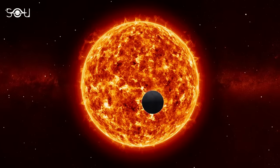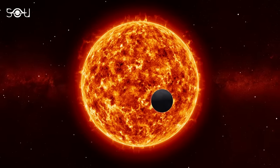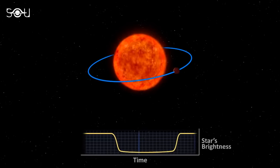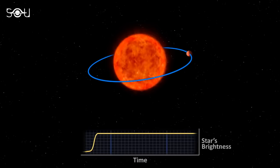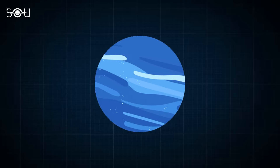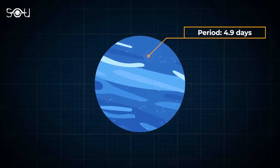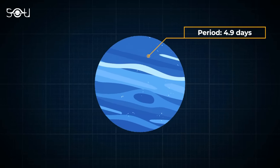The transit method can also reveal some of the planet's crucial physical parameters. For example, by looking at the period at which the dip in starlight is occurring, one can calculate the orbital period of the planet. TOI 733b has an orbital period of 4.9 days, which means that it orbits its star very close.